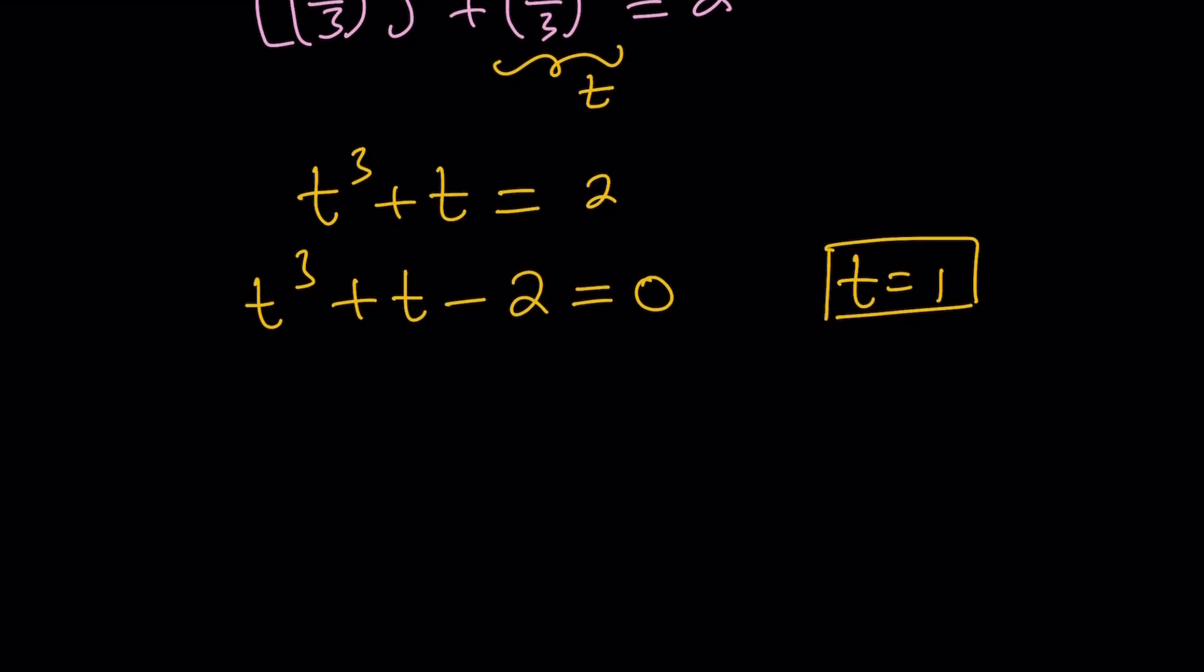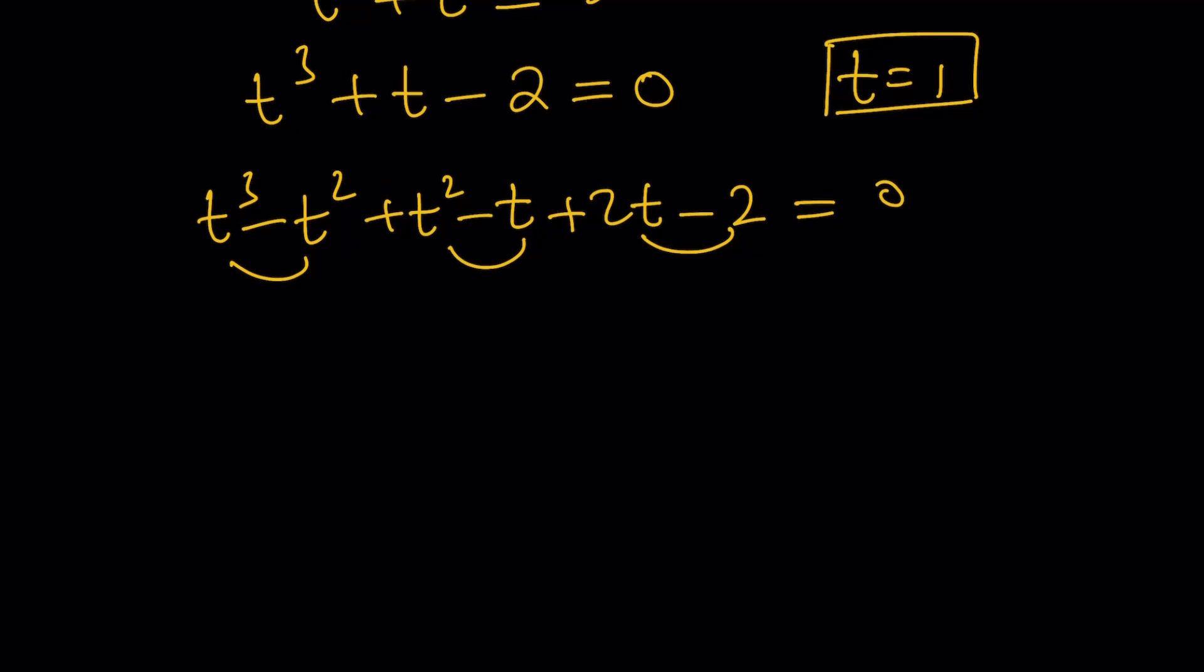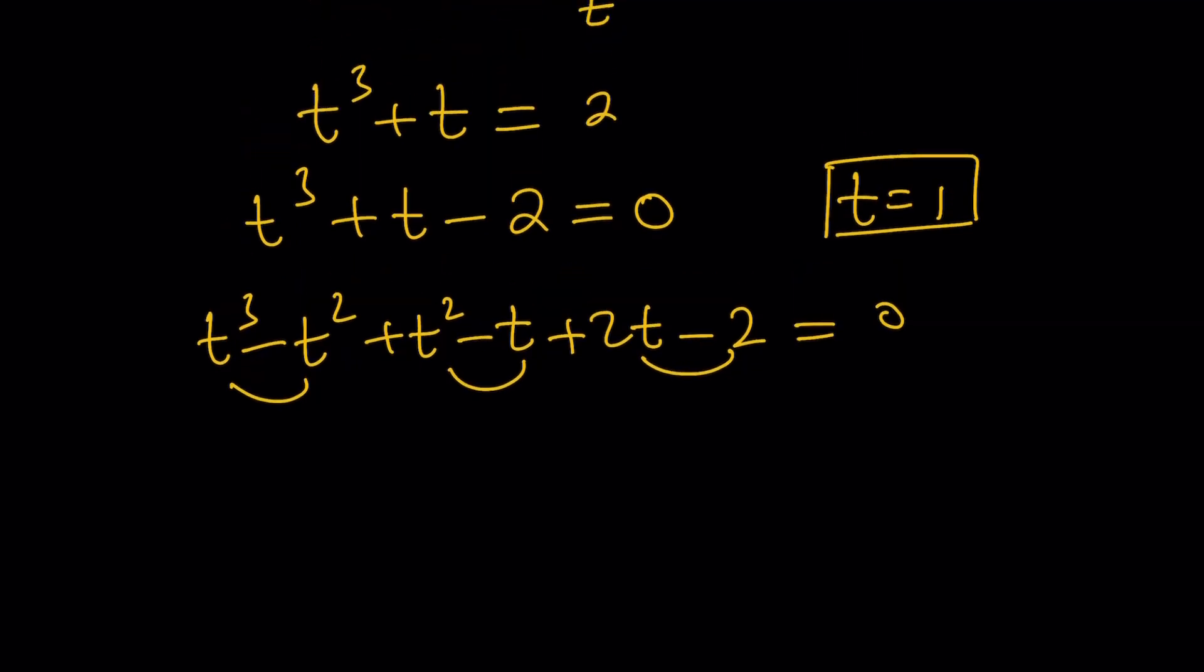But how can I arrange the terms? I can just go ahead and do the following. I can write this as t cubed minus t squared plus t squared minus t, and then I have to follow with 2t and then minus 2 equals 0. So then we can go ahead and factor by grouping. If you want to use long division, that's fine too. You can just divide by t minus 1 because by factor theorem, this just means t minus 1 is going to be a factor.